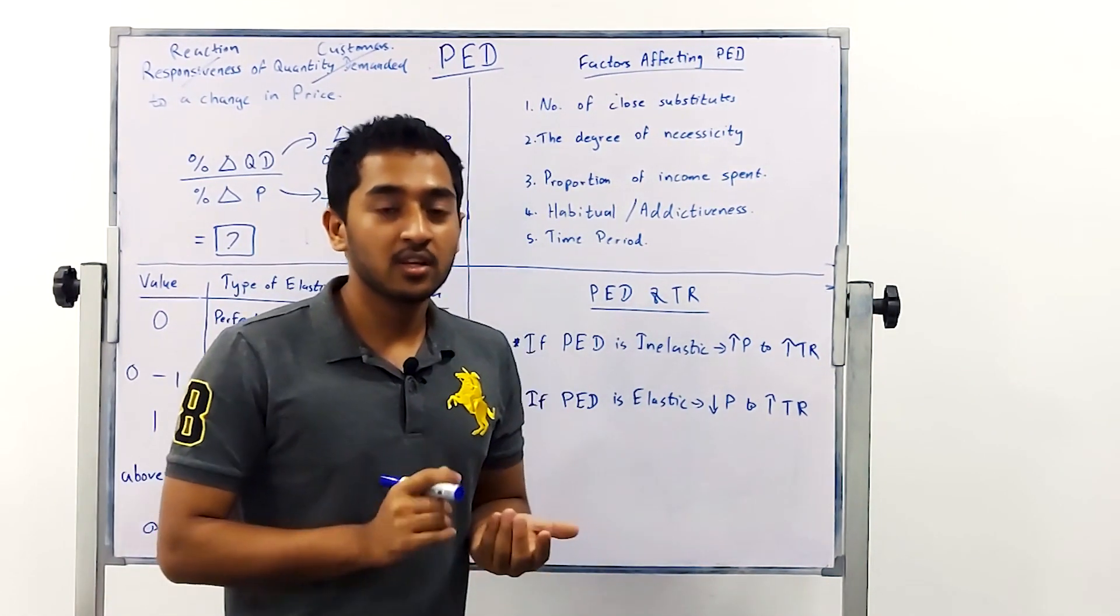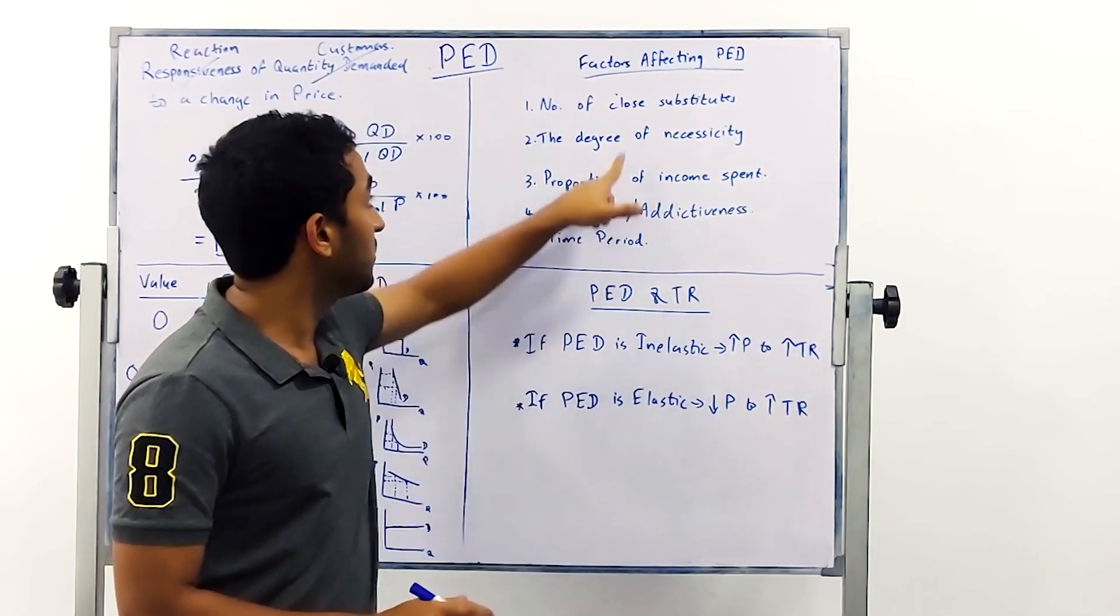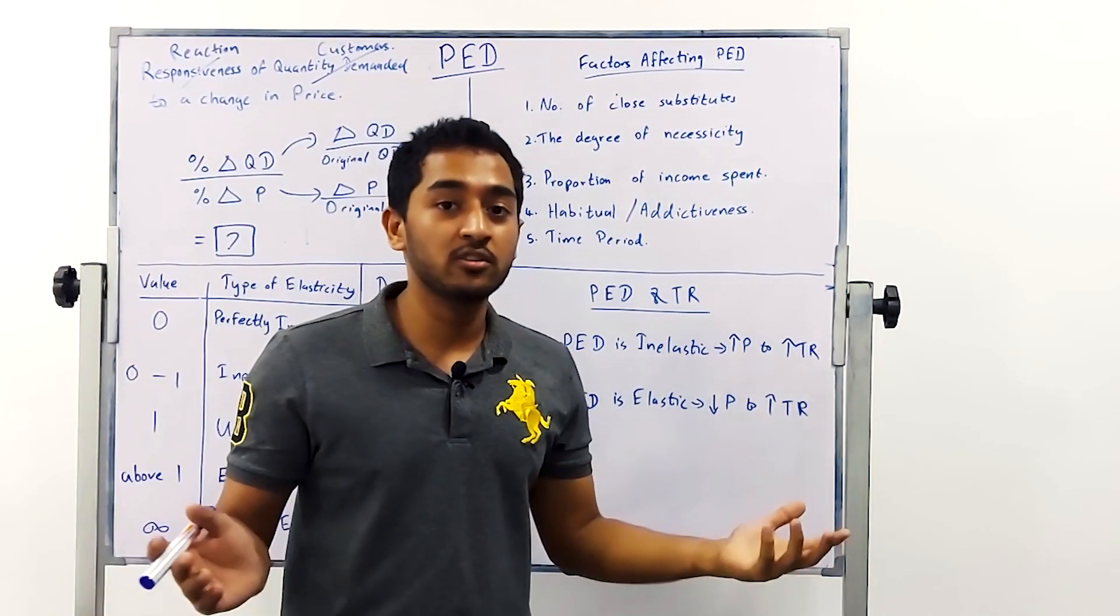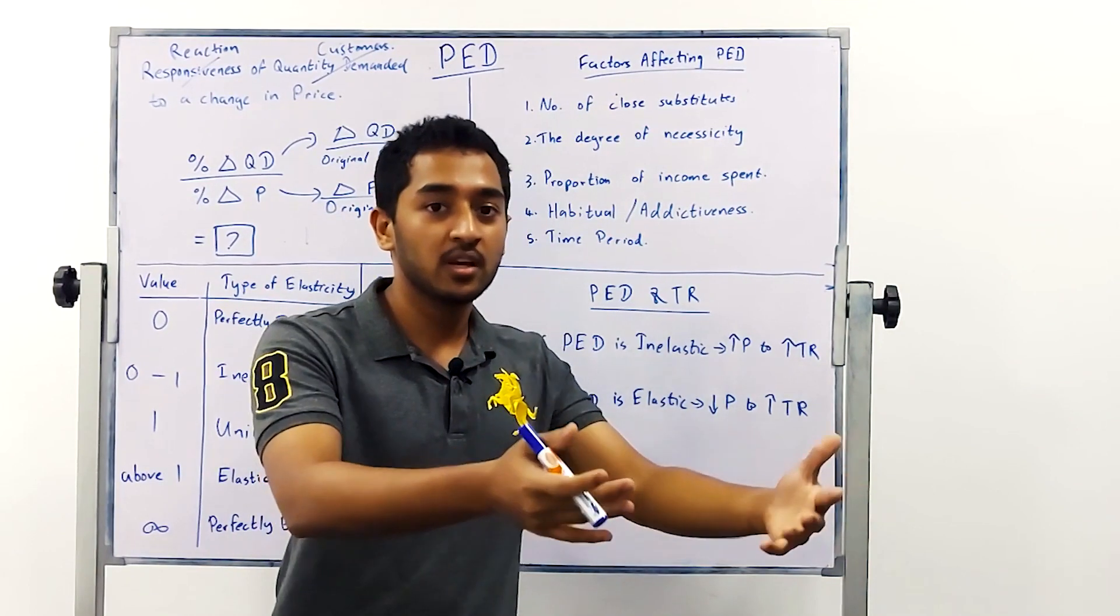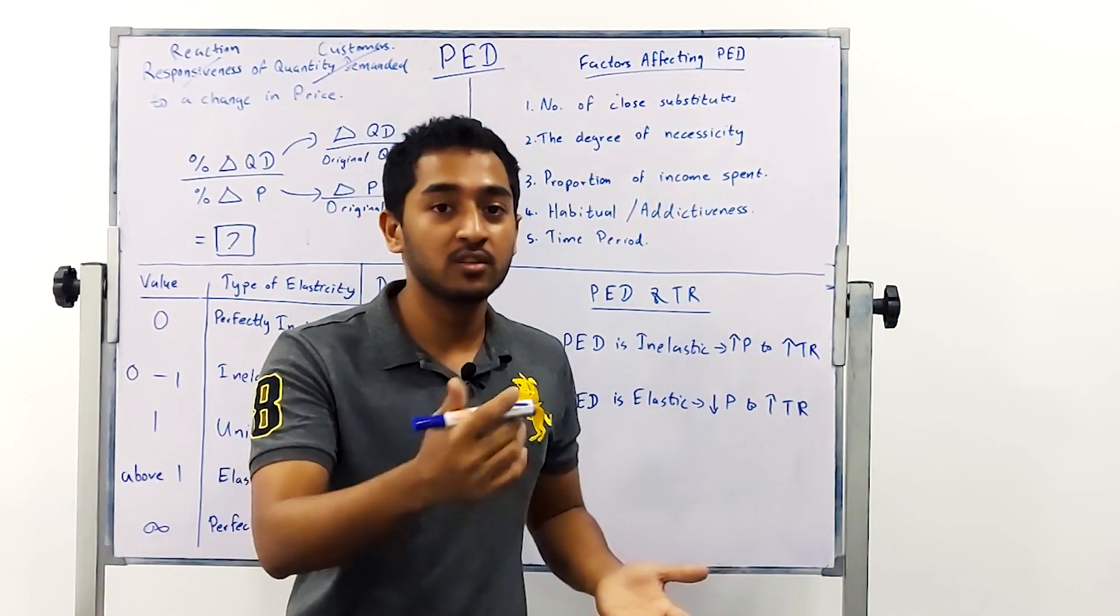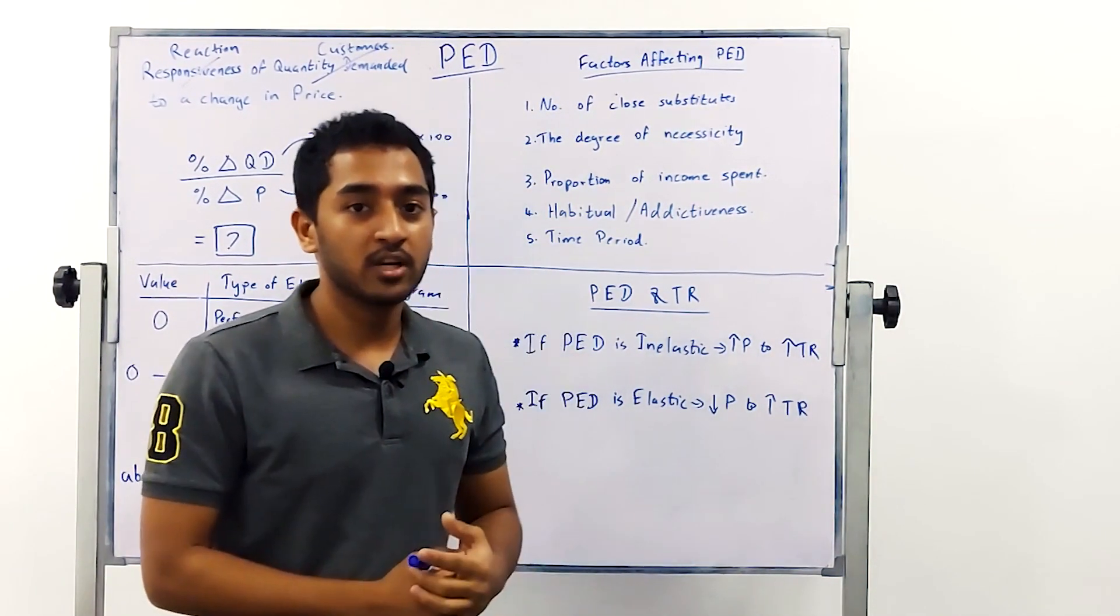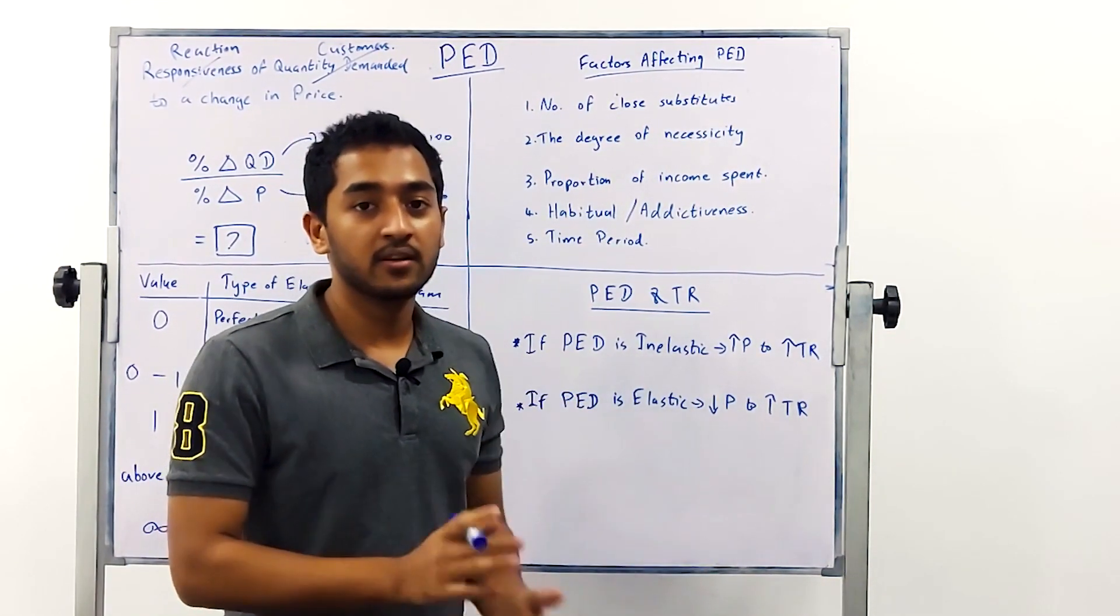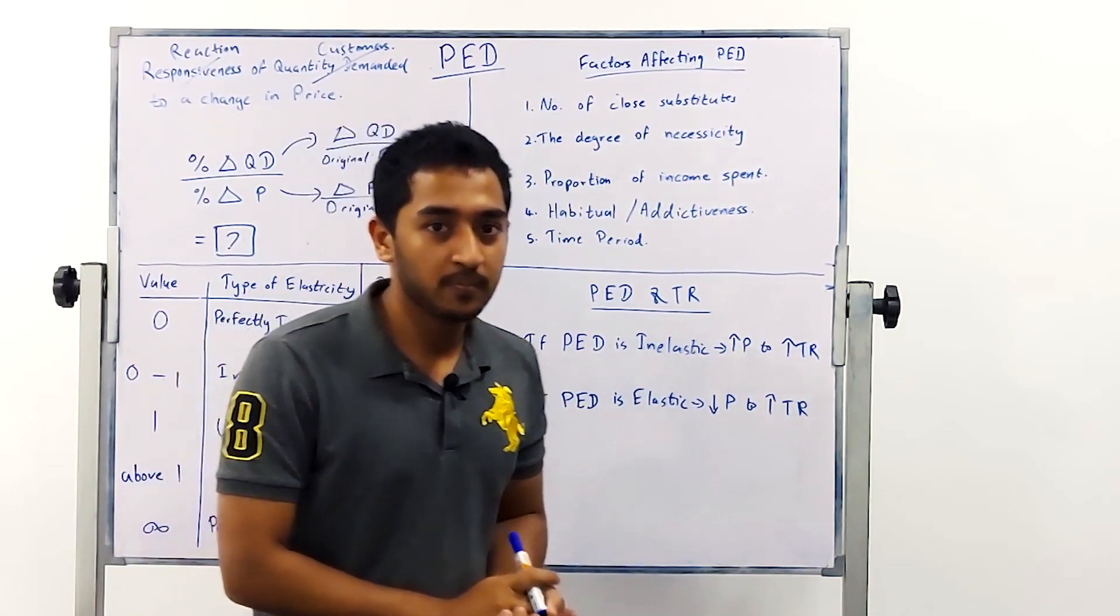If your price elasticity of demand is elastic drop your price because when you drop your price you're more likely to be in an industry with many substitutes. If you drop your price you're going to attract everyone else from other companies, consumers purchasing from other companies and you can drag them to your company to purchase your product which will then increase your total revenue.